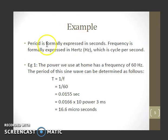Period is formally expressed in seconds, while frequency is formally expressed in Hertz, which is cycles per second. For example, the power we use at home has a frequency of 60 Hz.